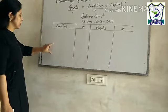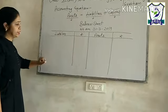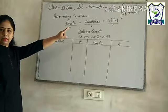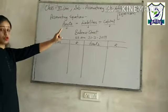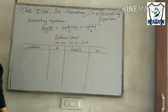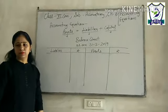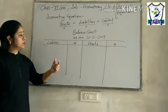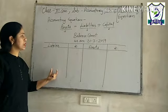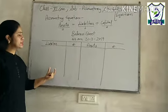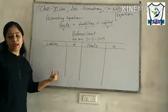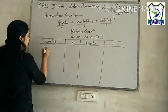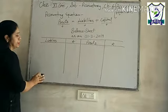On the right side, we write assets and the amount of assets. On the left side, we write liabilities and the amount of liabilities. Total liabilities include external and internal liabilities. Internal liability is capital — capital is also an internal liability of any firm, because the owner is different from the firm. The owner has invested money into the business, so that is the internal liability of the business.